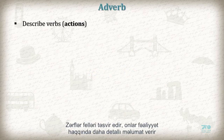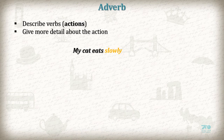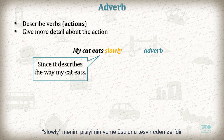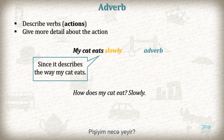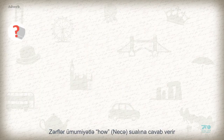Adverbs describe verbs and actions — they give more detail about the action. For example: 'My cat eats slowly.' Slowly is an adverb since it describes the way my cat eats. How does my cat eat? Slowly. Adverbs will generally answer the question 'how.'